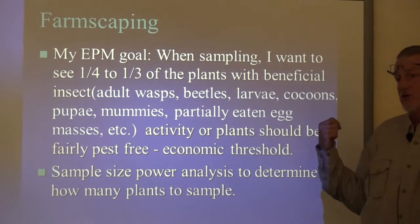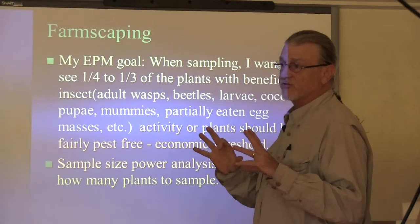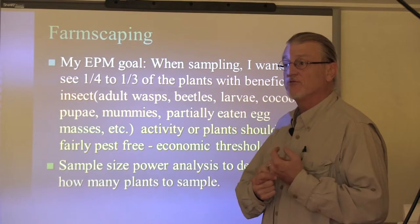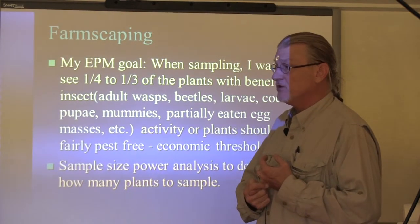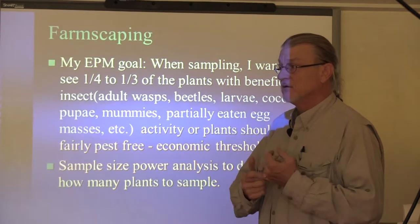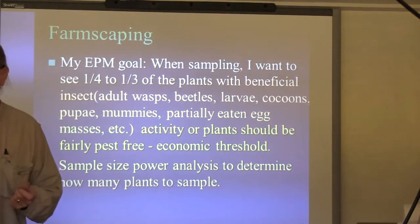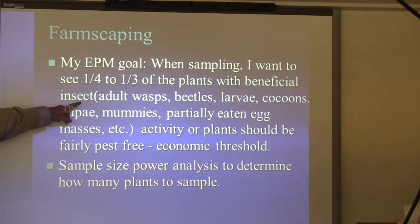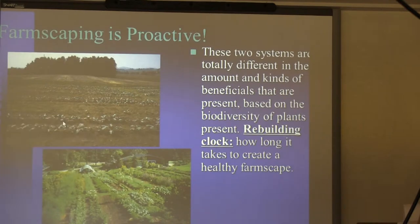When I scout my fields, I want a quarter to a third of the insects that I find to be some type of beneficial or the evidence of a beneficial. If I find a pupal case — like a ladybug pupal case — that counts as a beneficial as far as I'm concerned. So we have all these different things: adult wasps, lady beetles, larvae, cocoons, pupae, mummies of aphids.